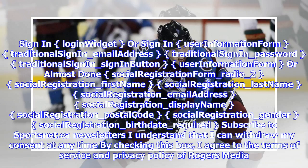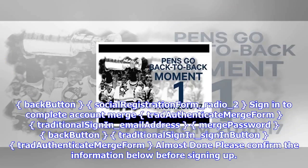Almost done. Social registration form underscore radio underscore two. Social registration underscore first name. Social registration underscore last name. Social registration underscore email address. Social registration underscore display name. Social registration underscore postal code. Social registration underscore gender. Social registration underscore birth date underscore required.